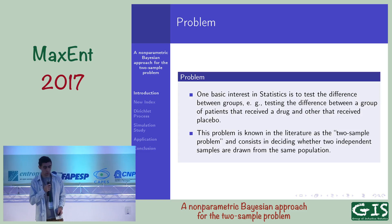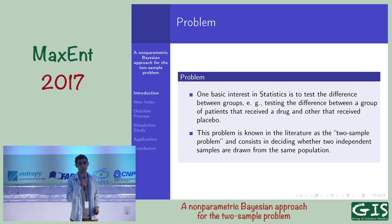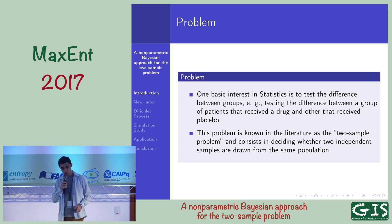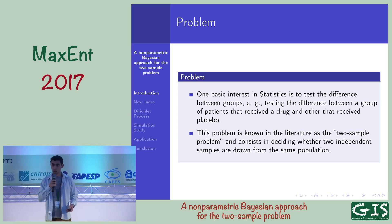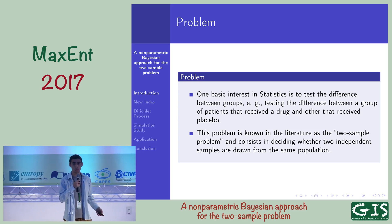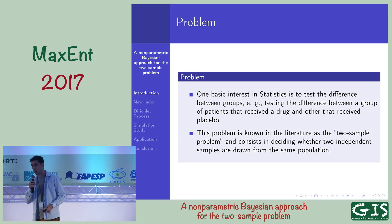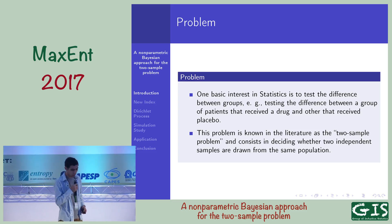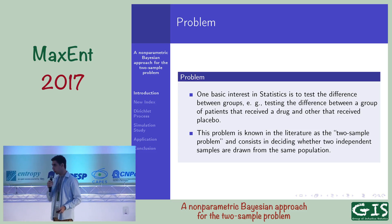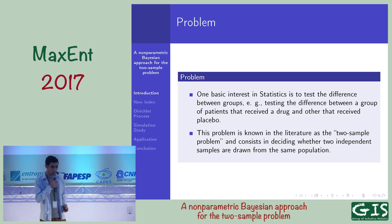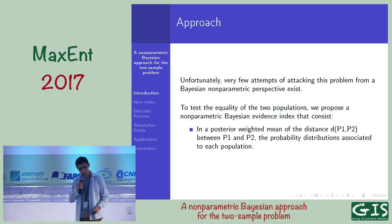One basic problem in statistics is to test the difference between two groups. For example, a group that received a placebo and a group that received a drug. This problem is known in the literature as the two-sample problem. It's a common problem in statistics.